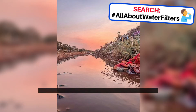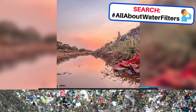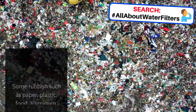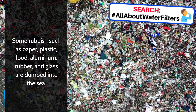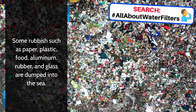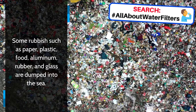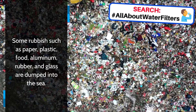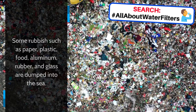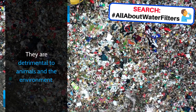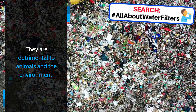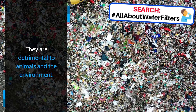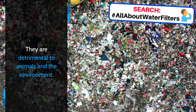4. Dumping in the sea: Some rubbish such as paper, plastic, food, aluminum, rubber, and glass are dumped into the sea. They are detrimental to animals and the environment.